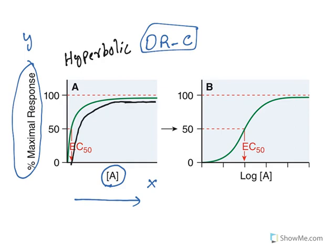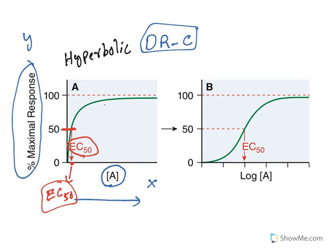This graph is known as a hyperbolic graph. When you increase the dose, the response reaches a maximum and then reaches a plateau phase where further increase in dose will not increase the response. You need to understand what EC50 means — effective concentration 50 means 50 percent of the maximum response. The dose that gives 50 percent of the maximum response is known as EC50.